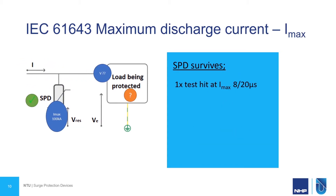IMAX is the maximum discharge current. This is the largest one-time test current that an SPD can survive. It's always a lot larger than the nominal current because this time it only needs to survive one hit, whereas nominal current needs to survive 15 hits. Note that while it's a good gauge to compare between different SPDs, it doesn't actually tell us anything about our protection of our load, because the residual voltage will be higher than UP, the voltage protection level.